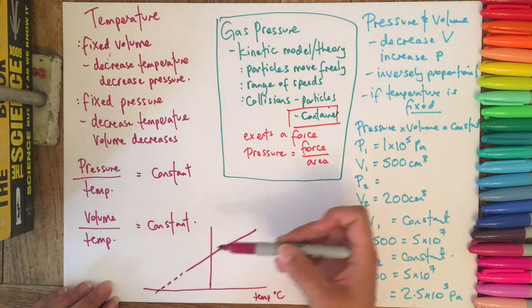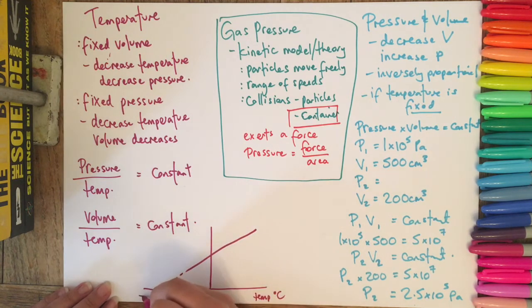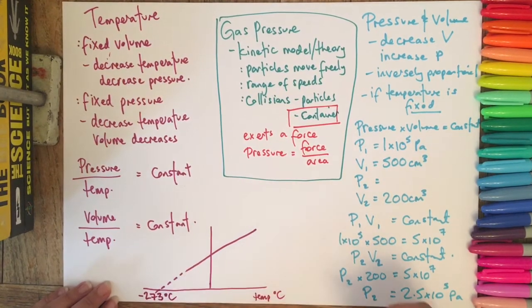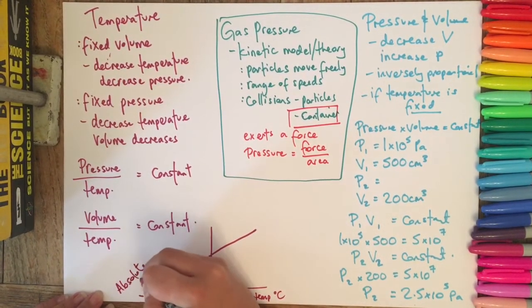And actually if we continued this on, so if we extrapolated, we don't have this data from the classroom because we're talking about very low temperatures here. The point at which the temperature or the pressure would become zero we know is minus 273 degrees Celsius, and this is termed absolute zero. It's theoretical because we can get things very close to it, to absolute zero, but not quite at absolute zero.